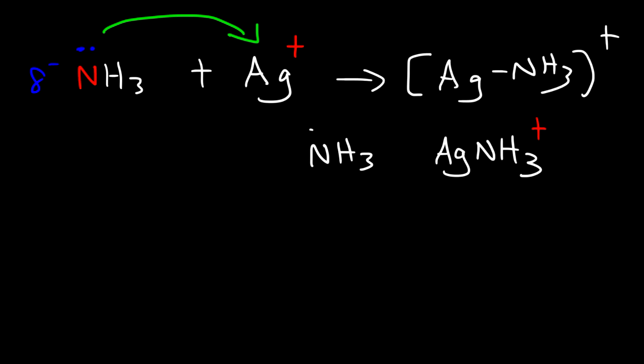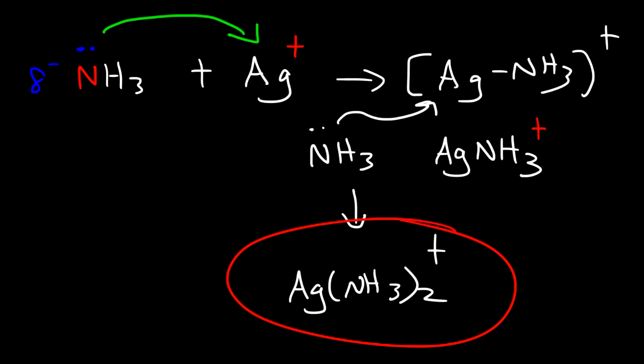Another ammonia molecule can interact with Ag again, forming this product. This is known as a complex ion—a metal ion that has ligands. The NH3 are the ligands attached to the metal ion. In this complex ion, we have a coordination number of two.